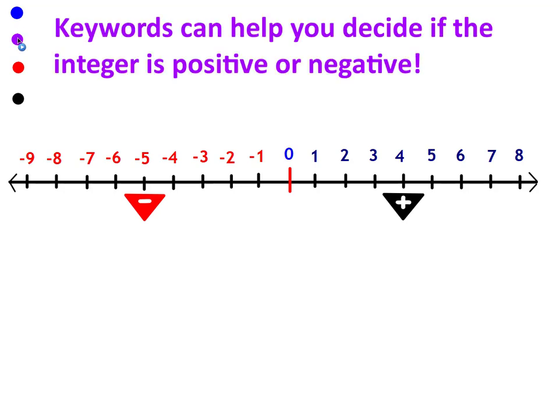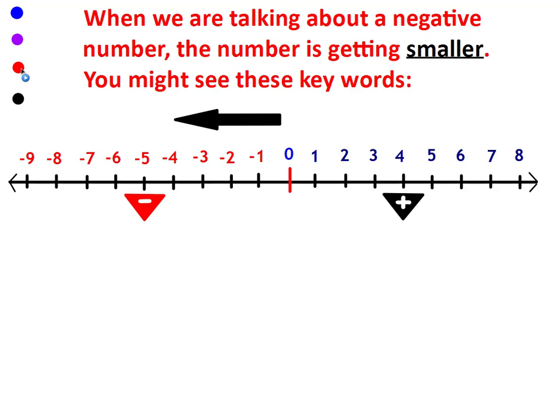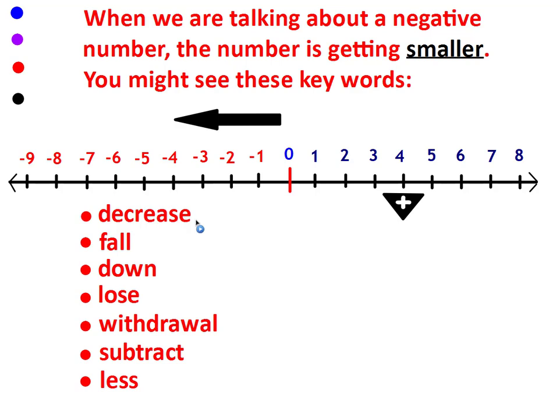Keywords can help you to decide if the integer is positive or negative. When we're talking about a negative number, the number is getting smaller and you might see these keywords: decrease, fall, down, lose, withdraw (this is when you take money out of your checking account or savings account), subtract, and less. These are all keywords that let you know that the number is getting smaller, that it can be a negative number.